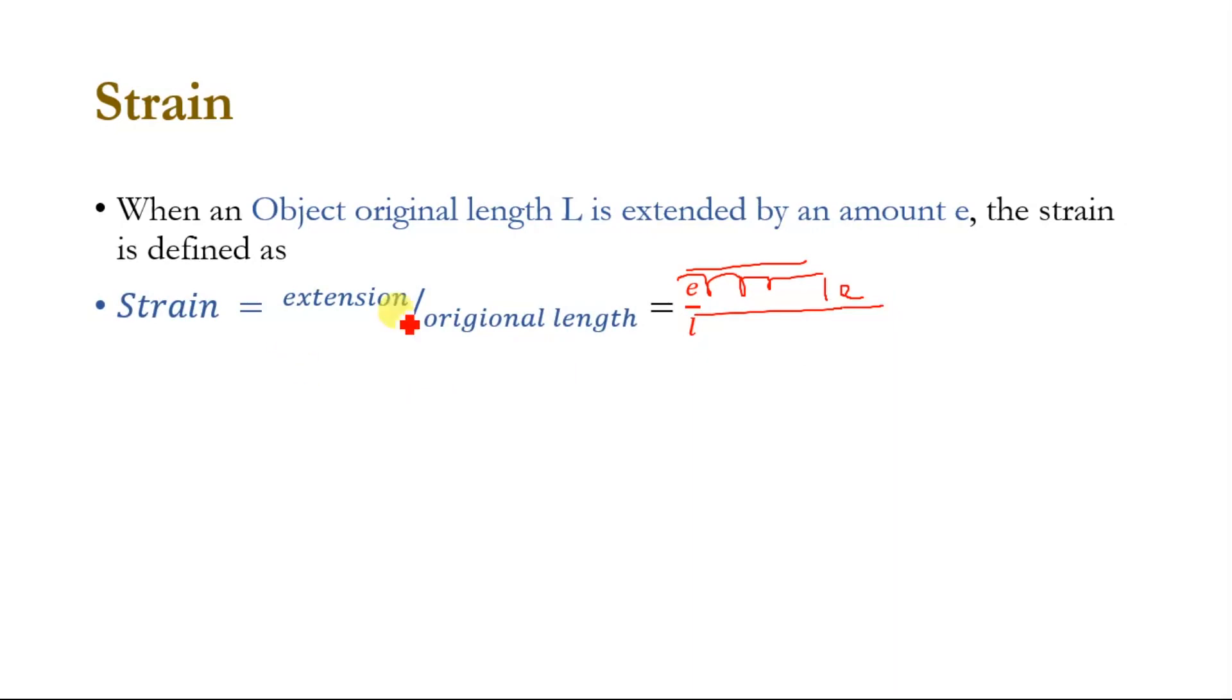Strain is equal to extension divided by original length. Strain is the ratio of two lengths and does not have a unit.